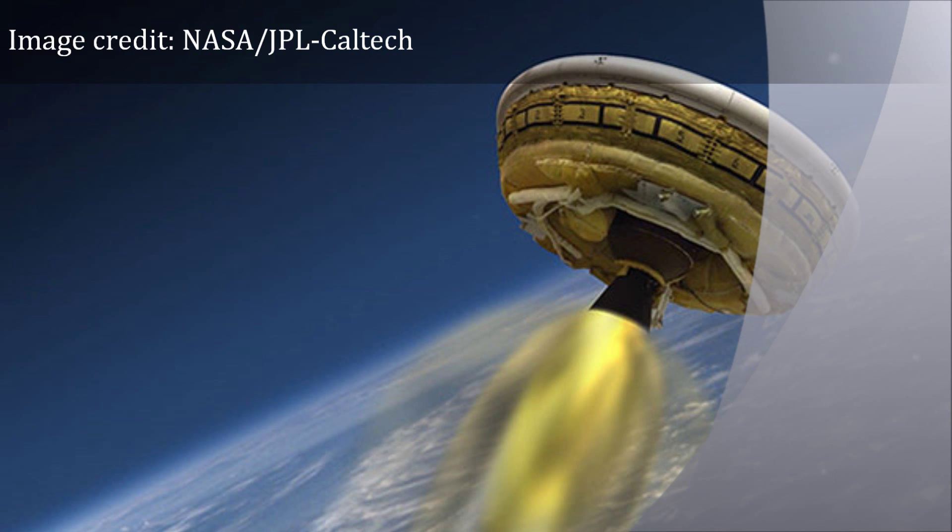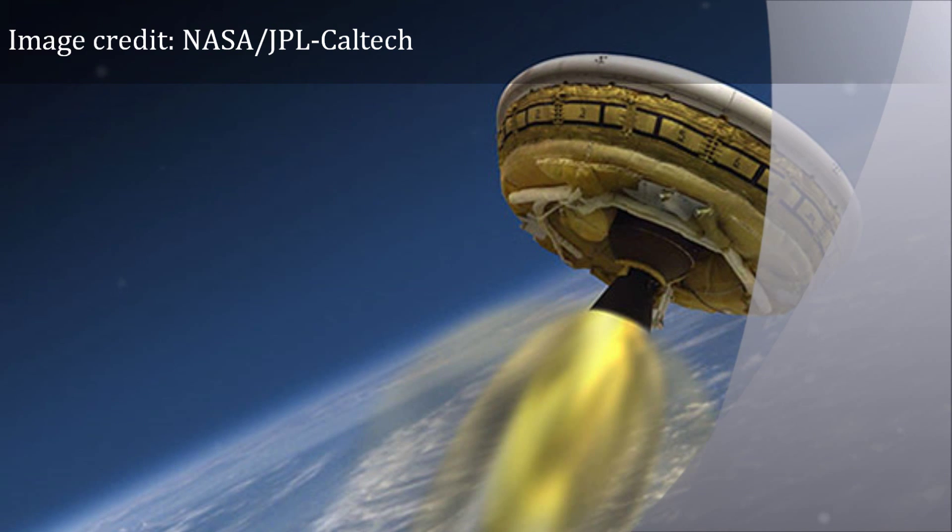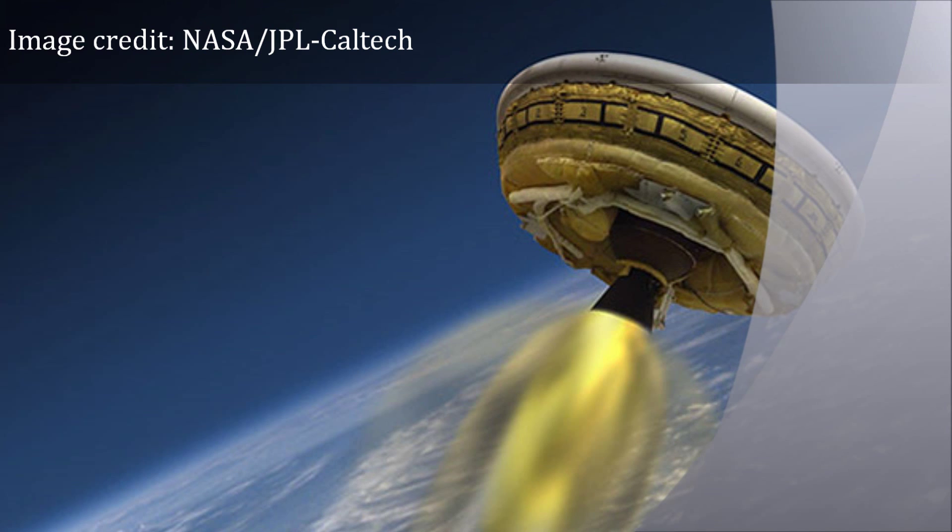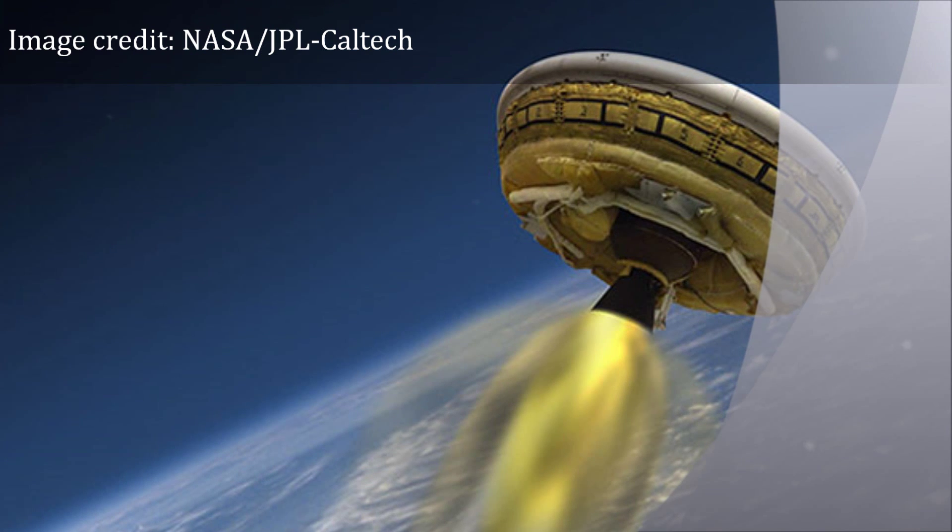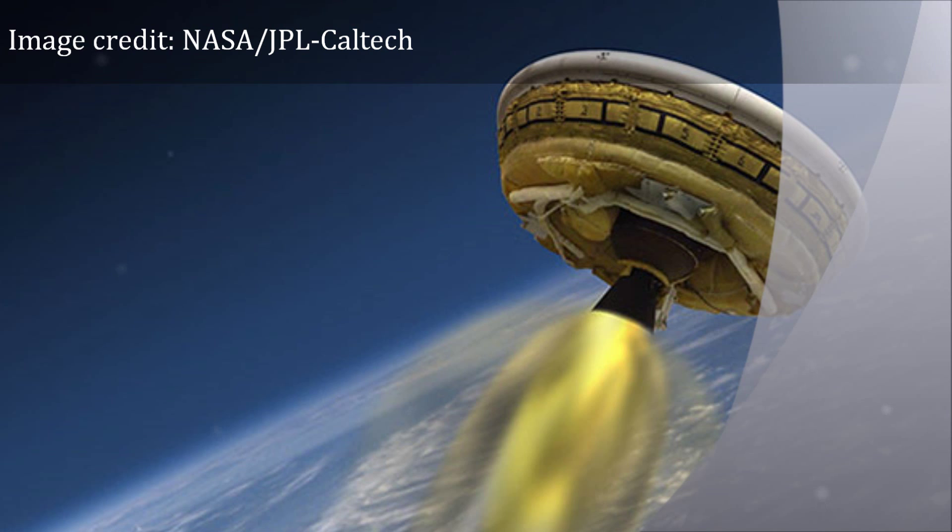Since the 1970s, NASA has used the same parachute design to slow down landers and rovers cutting through the thin Martian atmosphere.